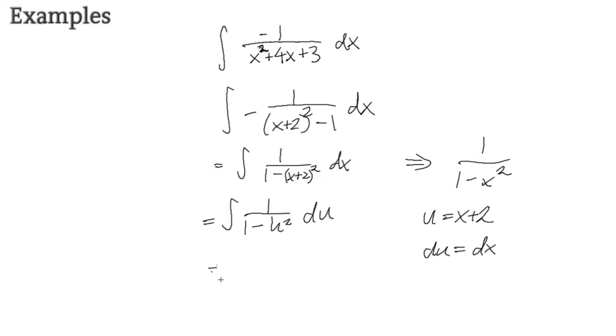Which will give us arc tanh of u plus the constant c. And that u, according to this, is x plus 2, so we have arc tanh of x plus 2 plus c.